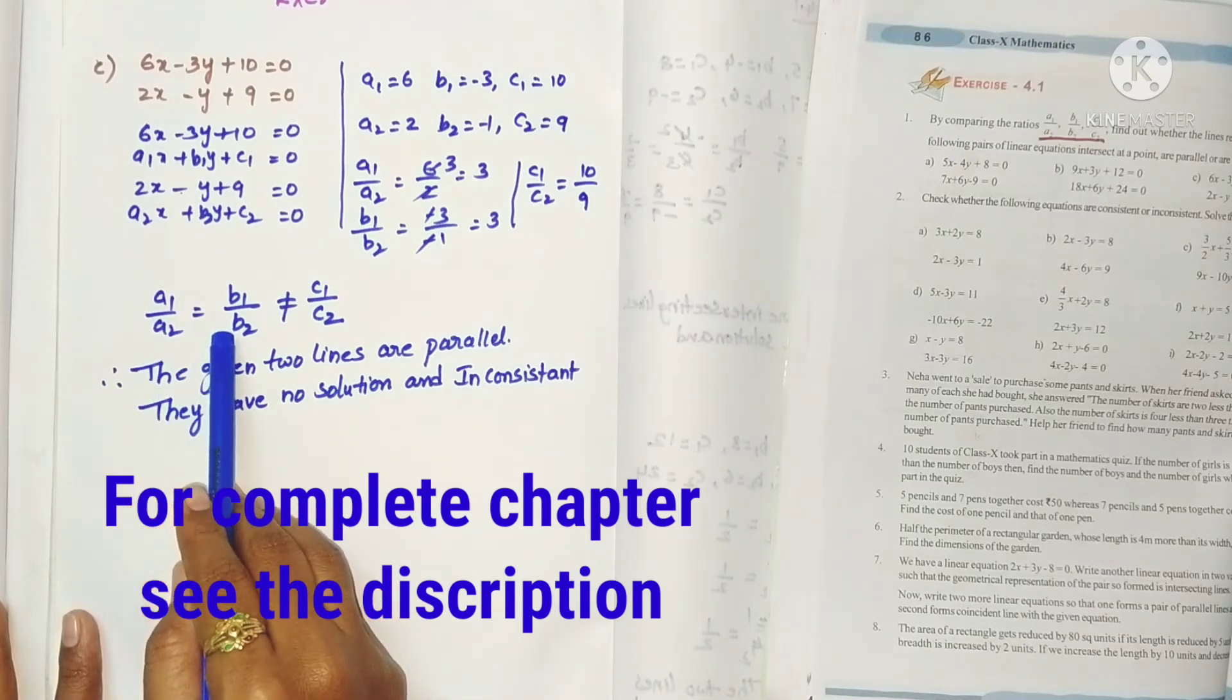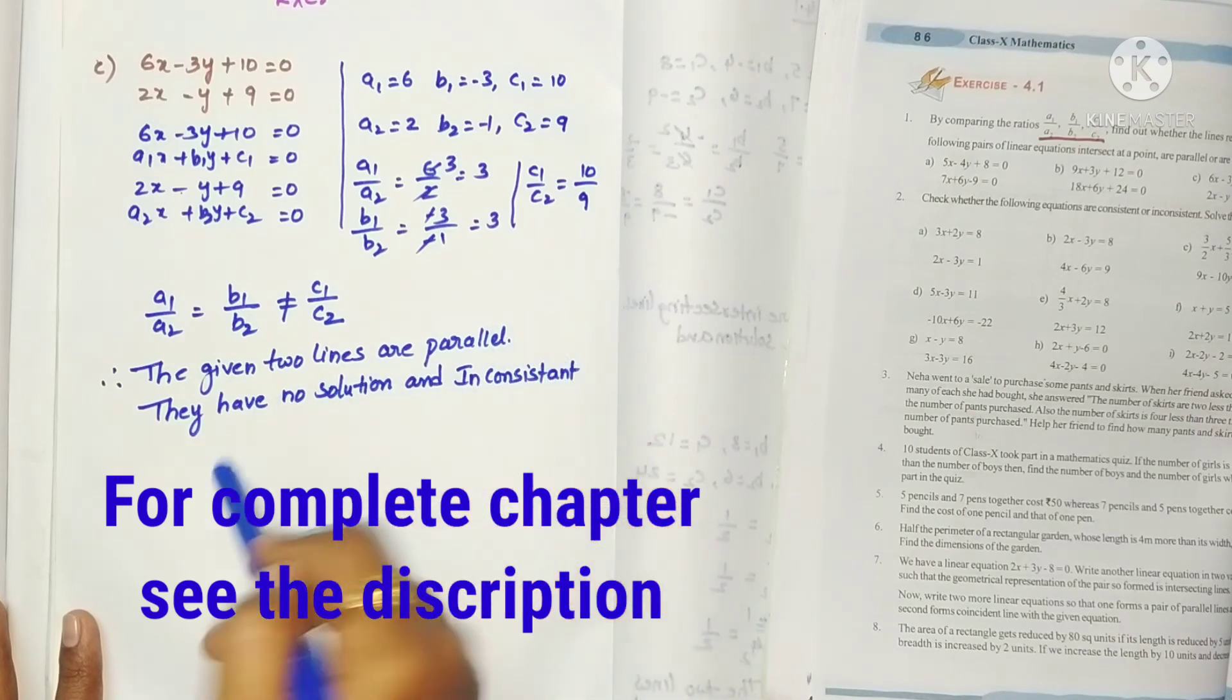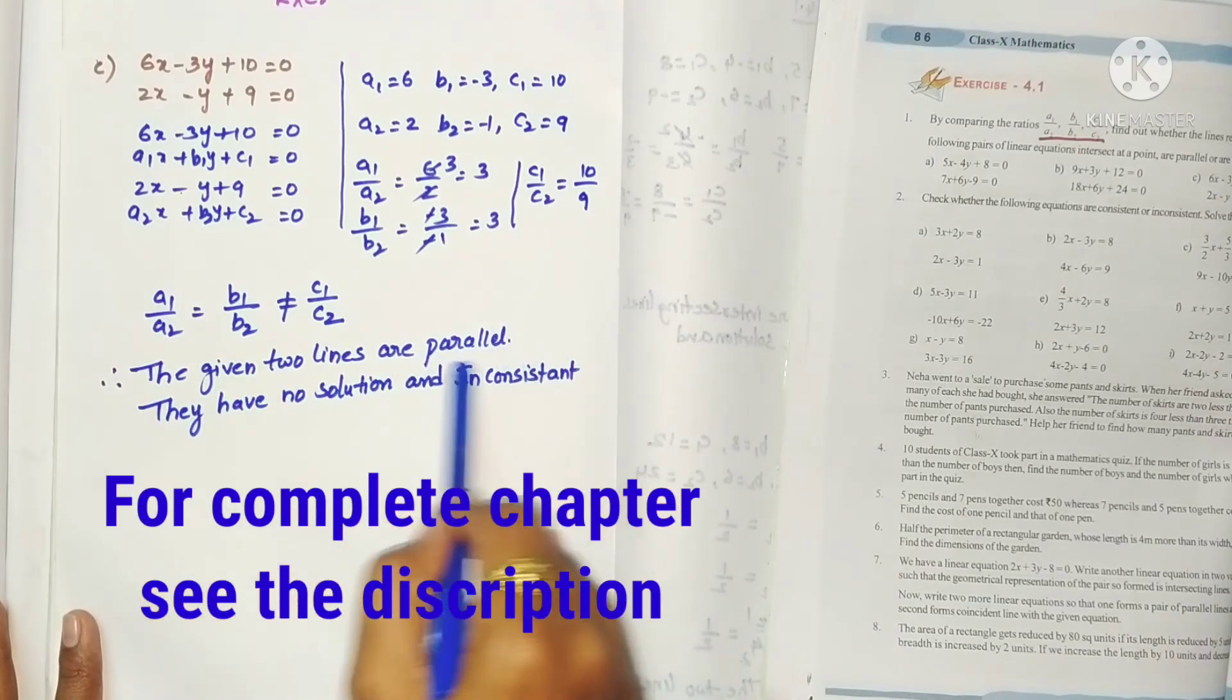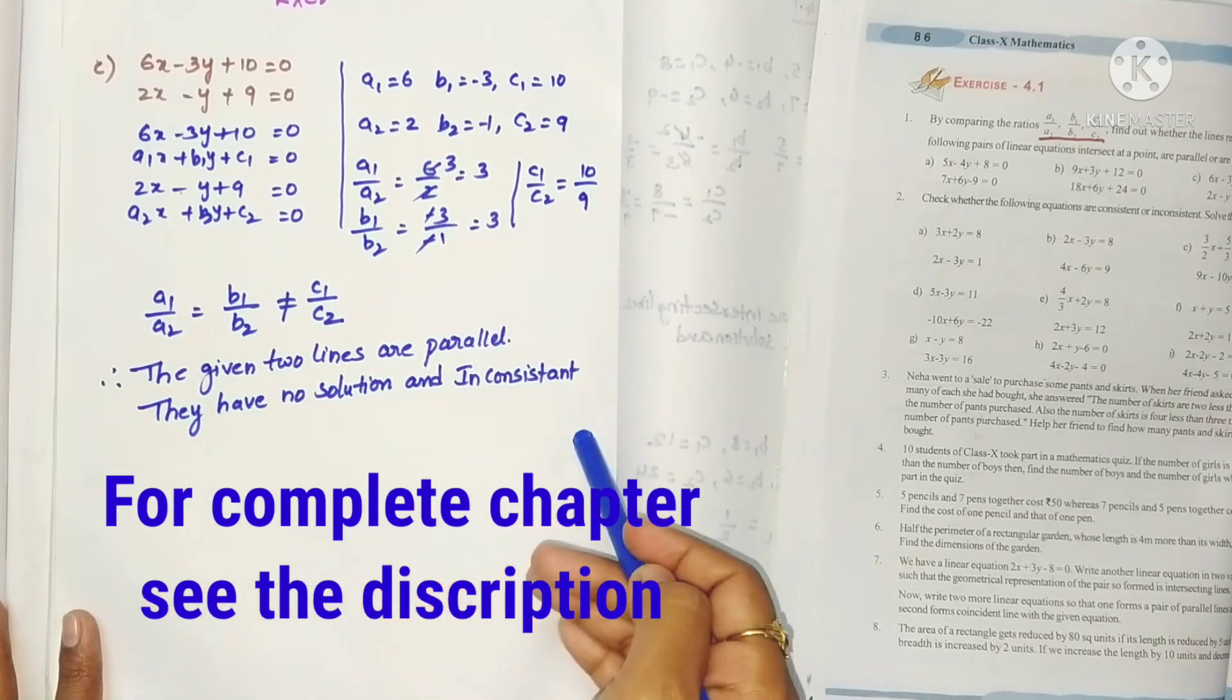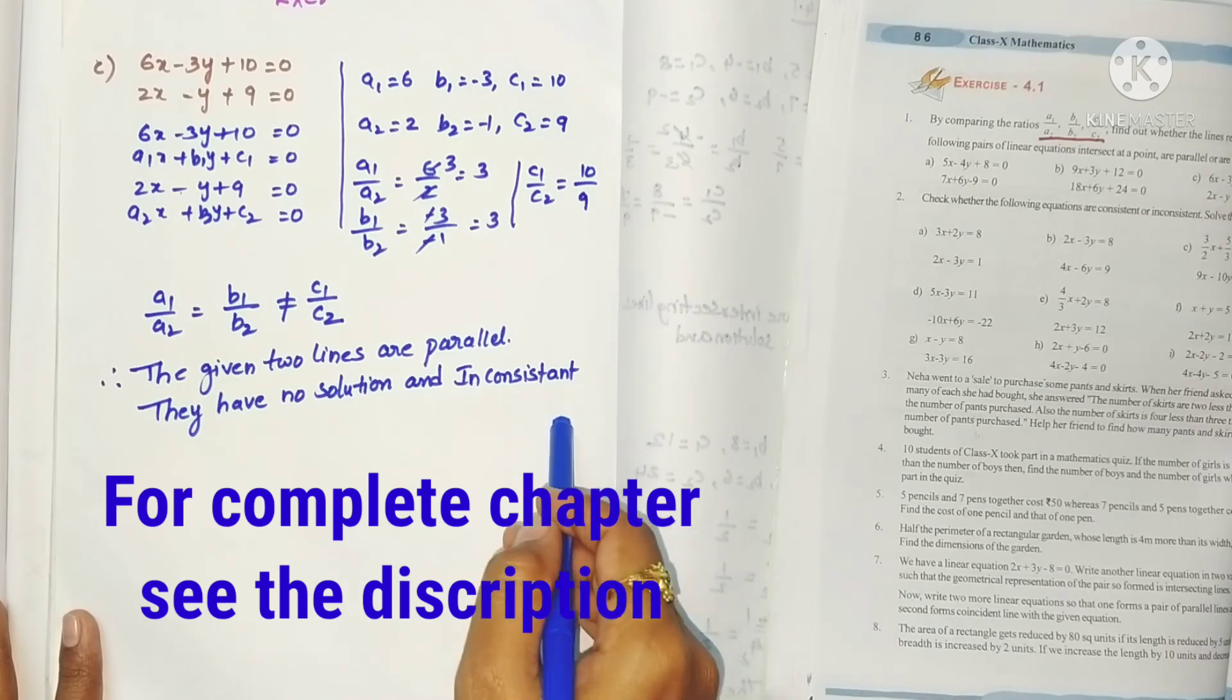c1 by c2 is 10 by 9. So here a1 by a2 equals b1 by b2 not equals c1 by c2. So the given two lines are parallel. They have no solution and are inconsistent. No solution means they are inconsistent.